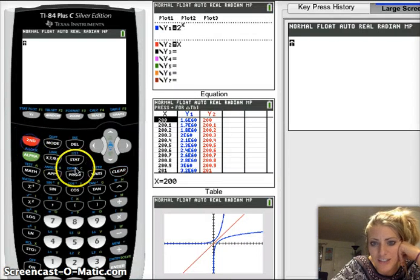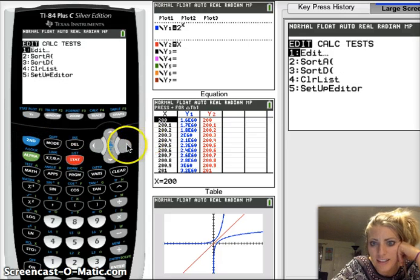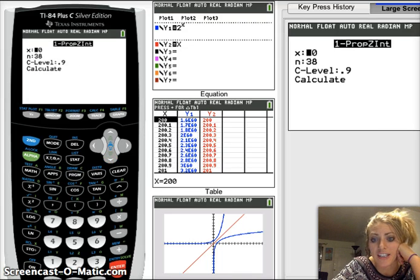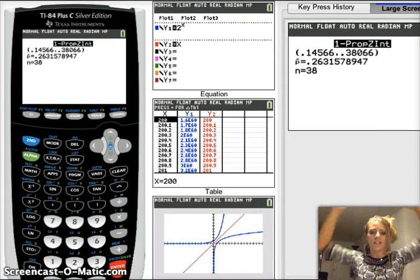Okay, really fast. This is how you do it on the graphing calculator. You go to stat, calc, you do tests and then you do one proportion z interval, plug in all your data, get your calculate and confidence interval.